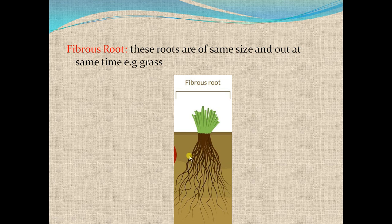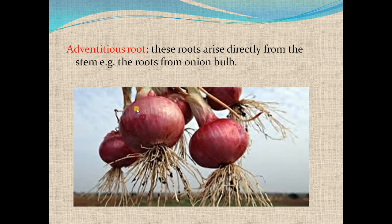You can see here these roots — they are of same size and arise at the same time. Adventitious root: these roots arise directly from the stem, like the roots of the onion bulb. In the previous lecture you studied the onion bulb. Here in this region the stem is present, and from this stem these roots arise, and these roots are called adventitious roots.